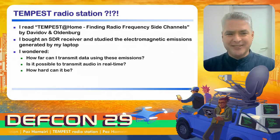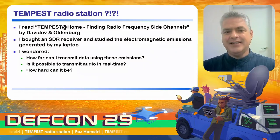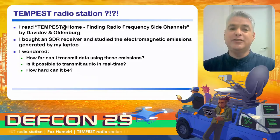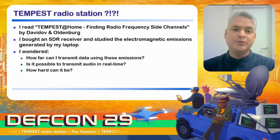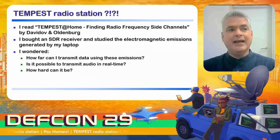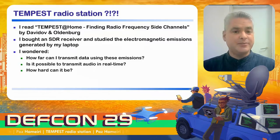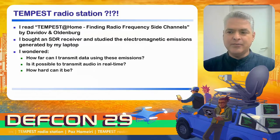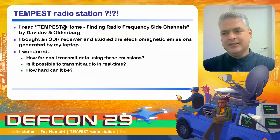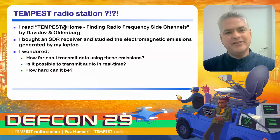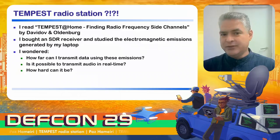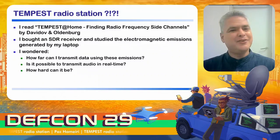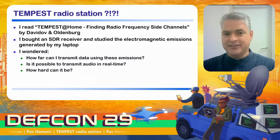How did I end up doing a project named Tempest Radio Station? I read 'TEMPEST at Home: Finding Radio Frequency Side Channels' by Davidov and Oldenberg. They wrote about their experiments transmitting electromagnetic waves from a computer to a remote receiver 50 feet away and manipulated the GPU clock to control the transmission. One of the most important things I found in their work was that, until then, I thought electromagnetic wave emission regulation tests were preventing computers from emitting so much energy into the air — and I was wrong. I also learned about software-defined radio receivers, or SDR receivers.